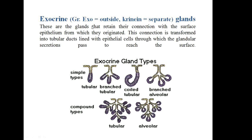Exocrine glands. The word exocrine means: exo means outside and crining means separate. These are the glands that retain their connection with the surface epithelium from which they originated. This connection is transformed into tubular ducts lined with epithelial cells, through which the glandular secretions pass to reach the surface.